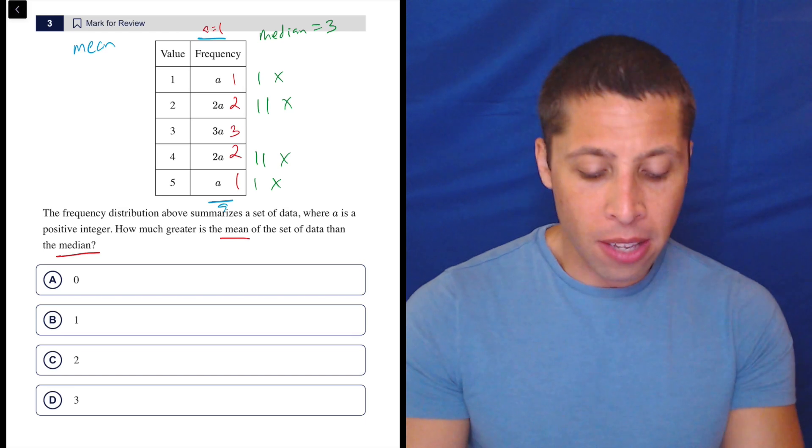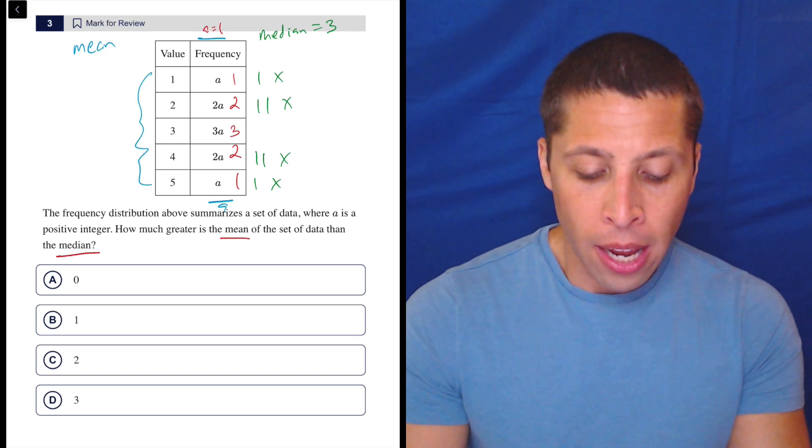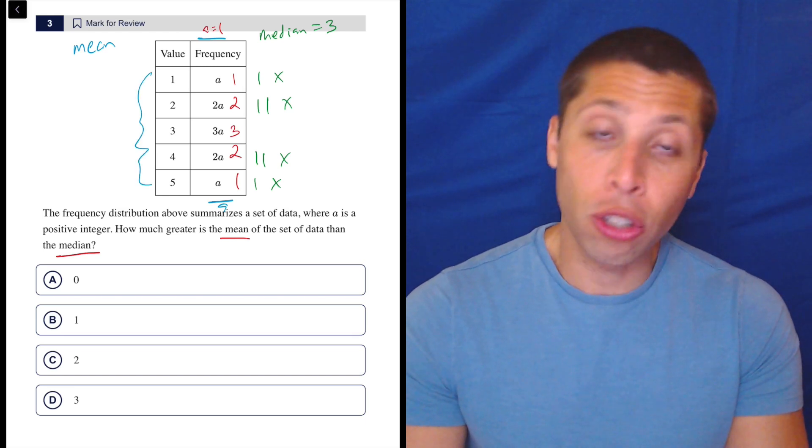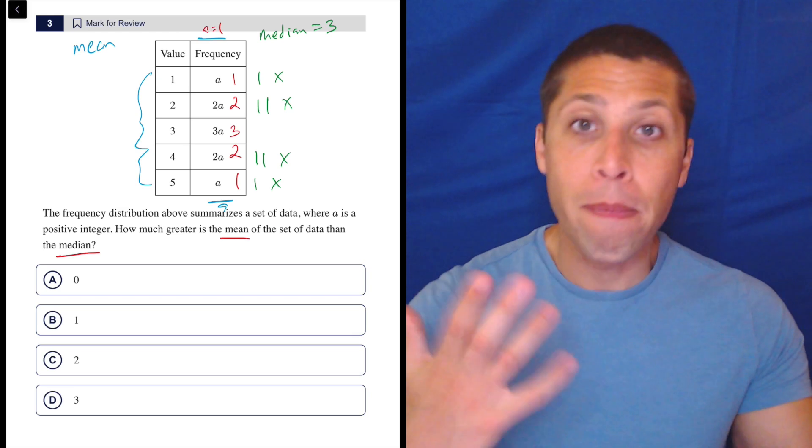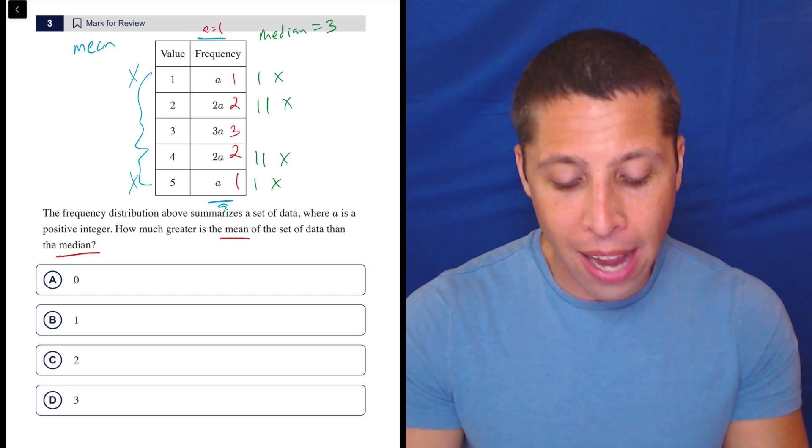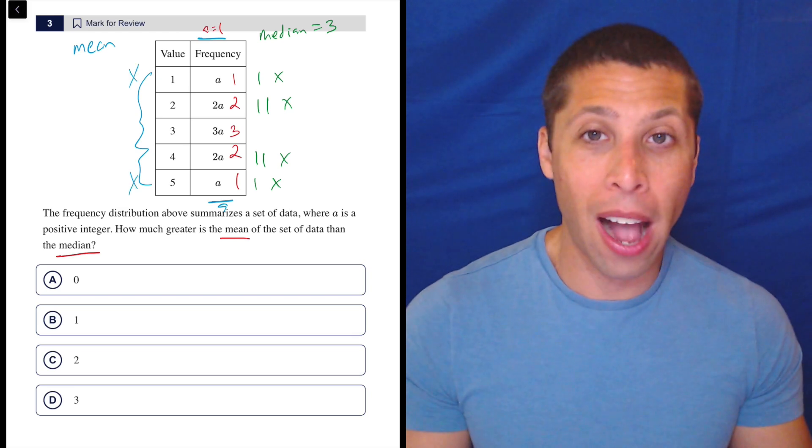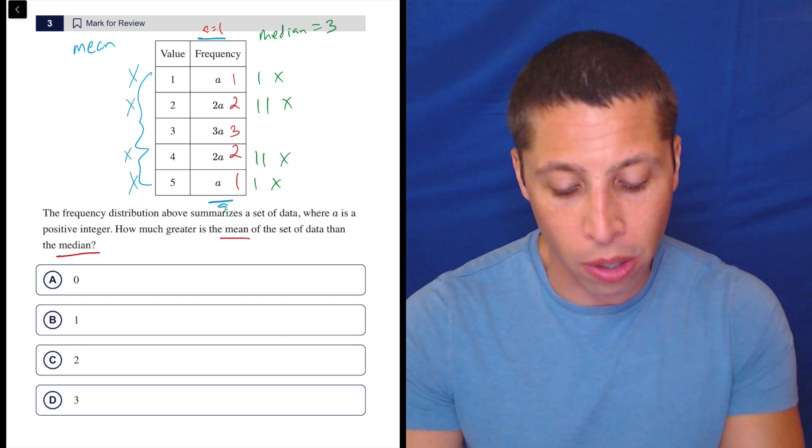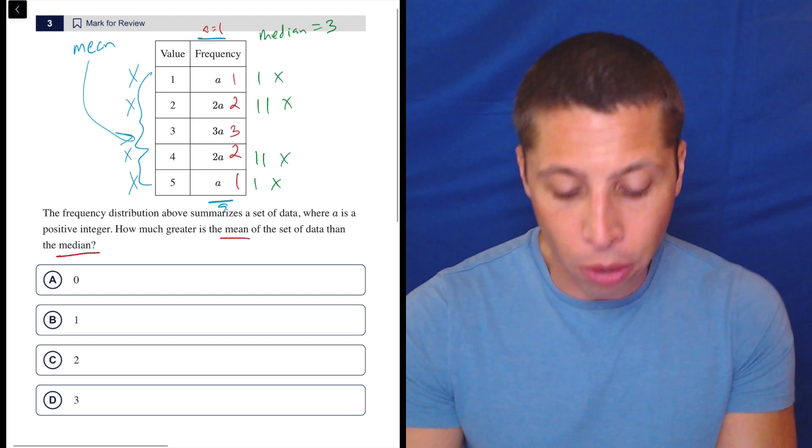But again, I don't need to do that because I can see that this is a well-balanced set. Because the numbers are evenly spaced here and the frequencies are kind of evenly distributed, they're symmetrical, I know that when I get rid of the 1 and the 5, they're both going to balance each other out in the average. Same with the 2s and the 4s. So my mean is also going to be 3.